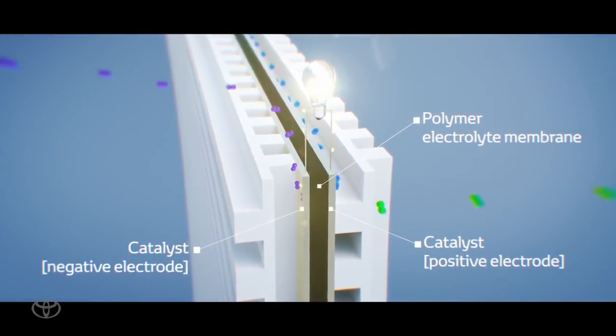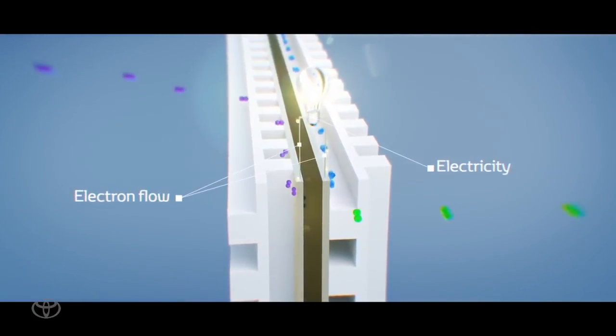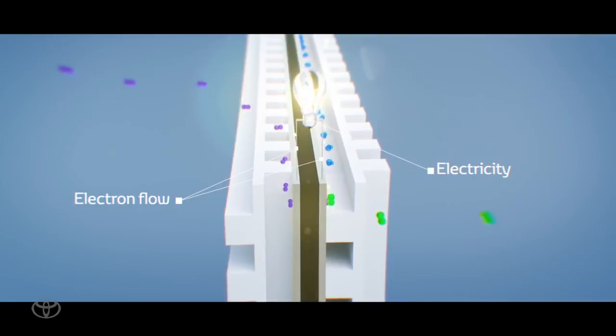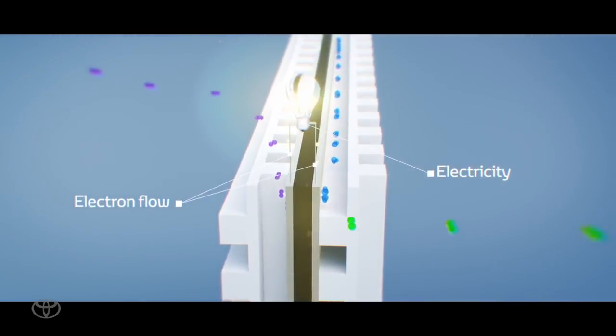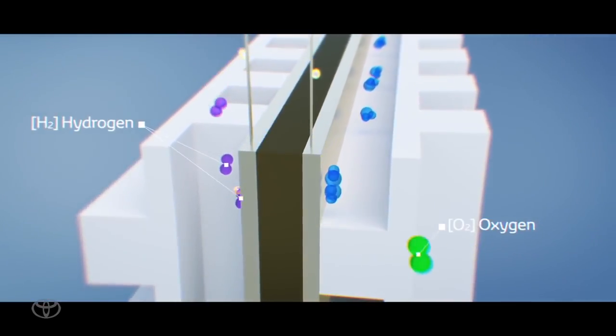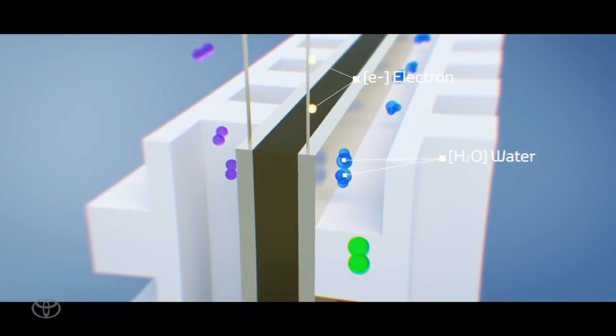Hydrogen is supplied to the negative anode and activates, releasing the electron. Then the electron flows to the positive cathode to generate the electricity. After releasing the electron, the hydrogen becomes a hydrogen ion, moving to the positive cathode and bonding with the oxygen in the air, forming water.